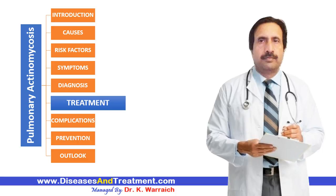Once diagnosed, treatment may involve medications or surgery. Penicillin is the most common antibiotic treatment, usually given as injections for two to six weeks, followed by oral penicillin for up to six to twelve months — the full treatment can take up to 18 months. If you are allergic to penicillin, your doctor will prescribe alternative antibiotics like tetracycline. Surgery may also be needed to drain fluid from the lungs or repair tissue damage, as excess fluid can lead to pulmonary edema.